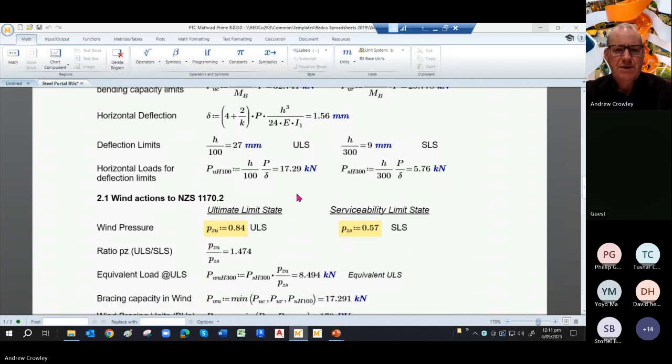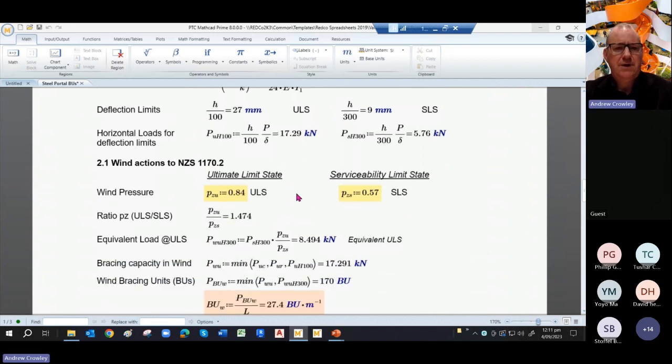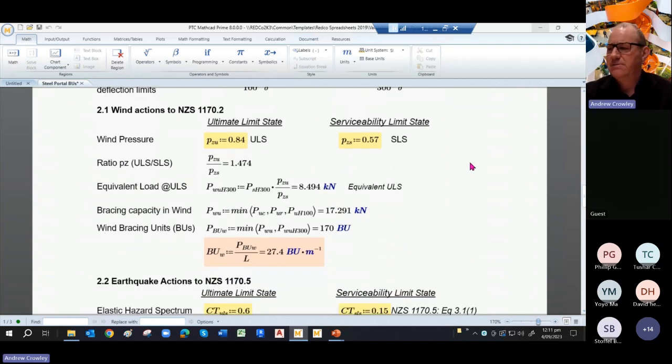We also get a limitation of 27 millimetres for the ULS state based on our notional deflection for a one kilonewton point load, factoring that up again. So factoring that through, the horizontal loads for the deflection limits come down to 17.29 and 5.72 respectively at ULS and SLS. So that's the first portion of the calculation. That's deriving it from the actual capacity of the steel frame.